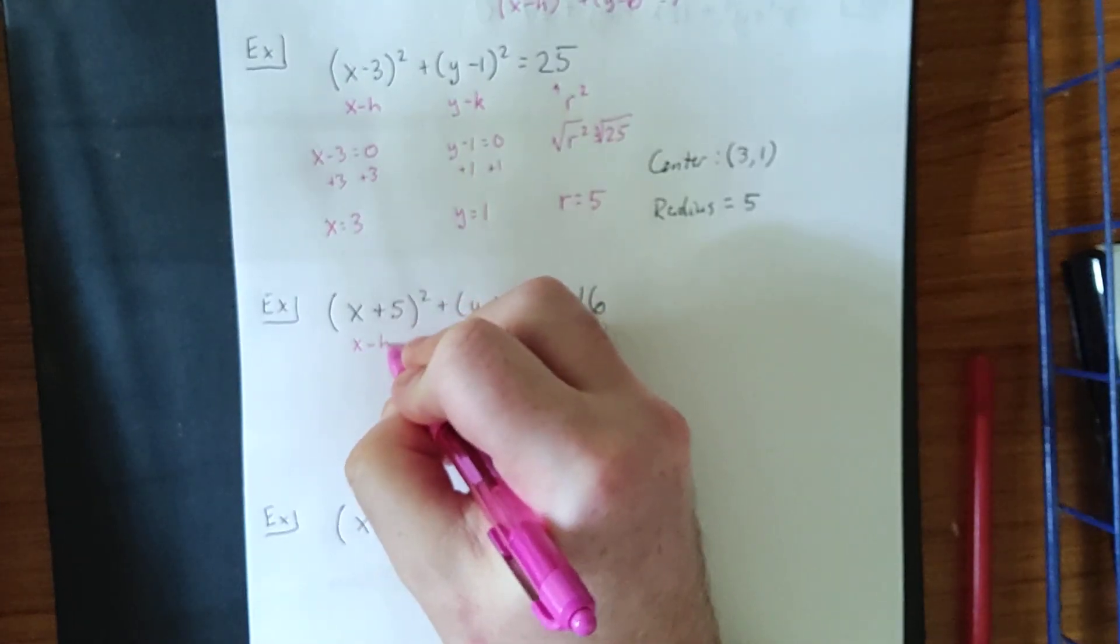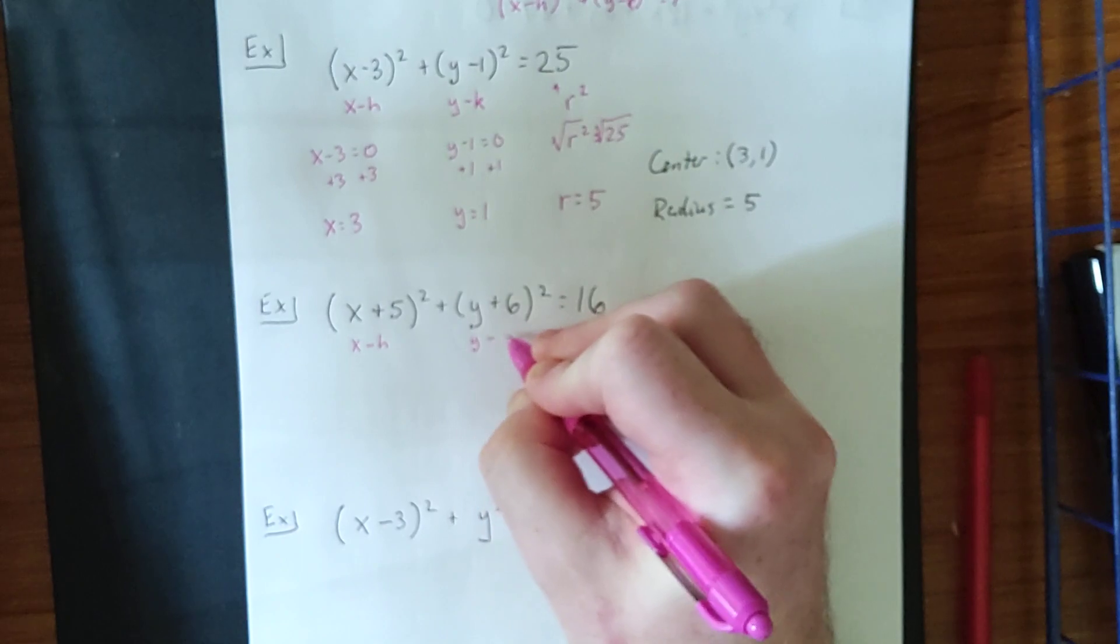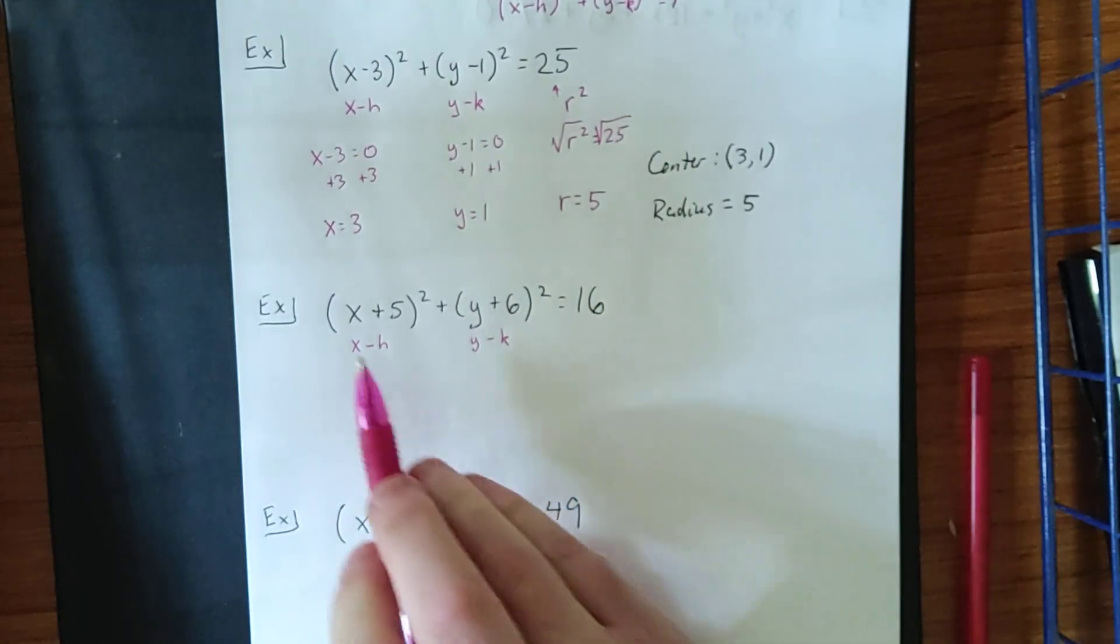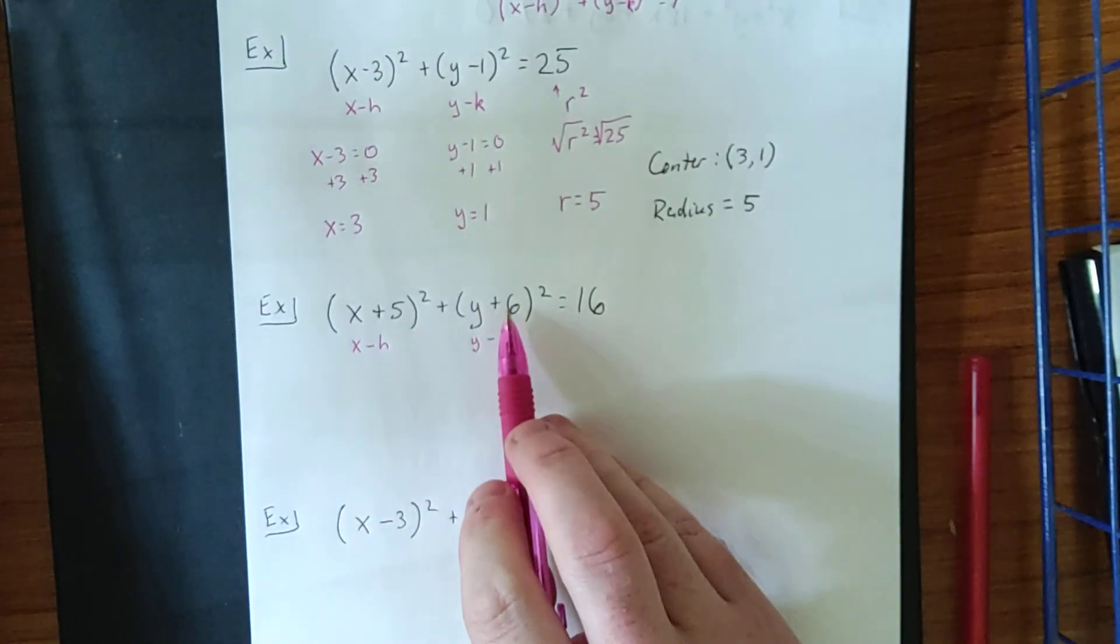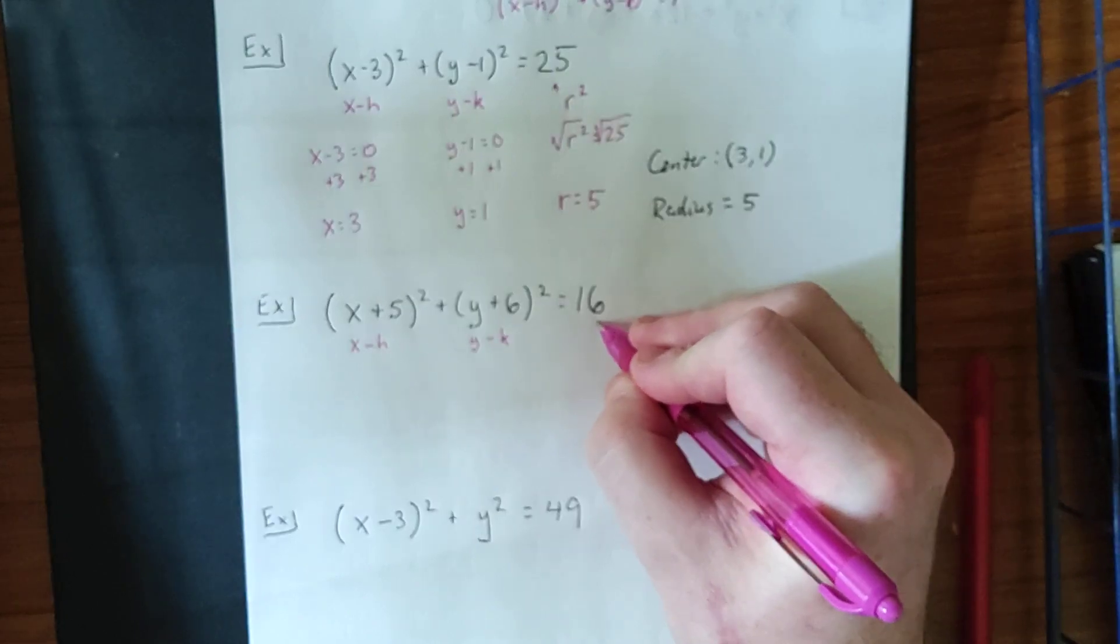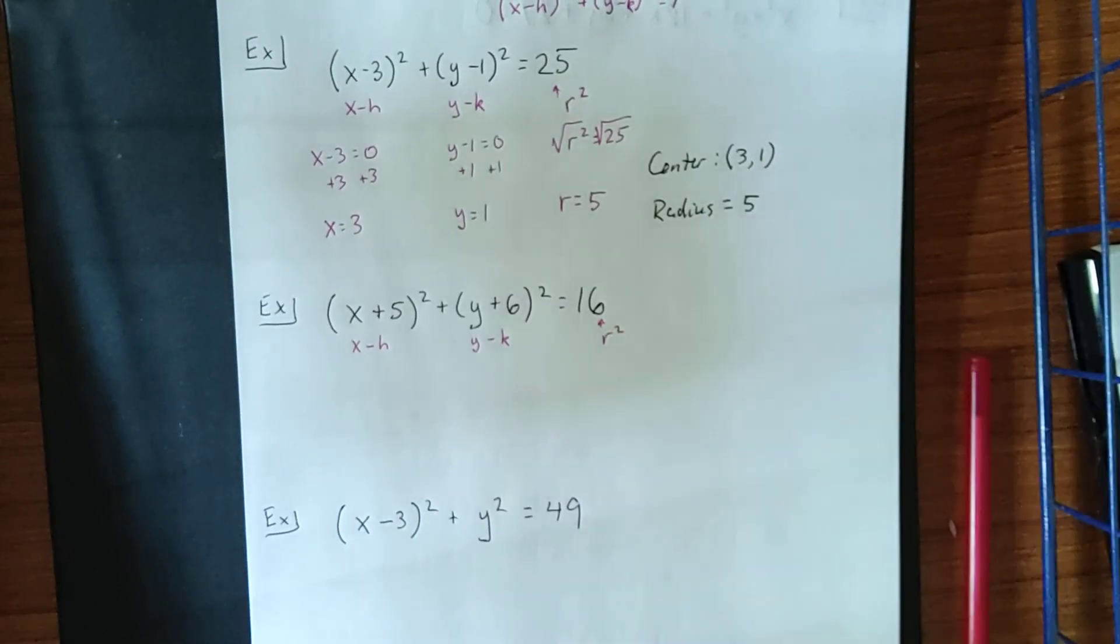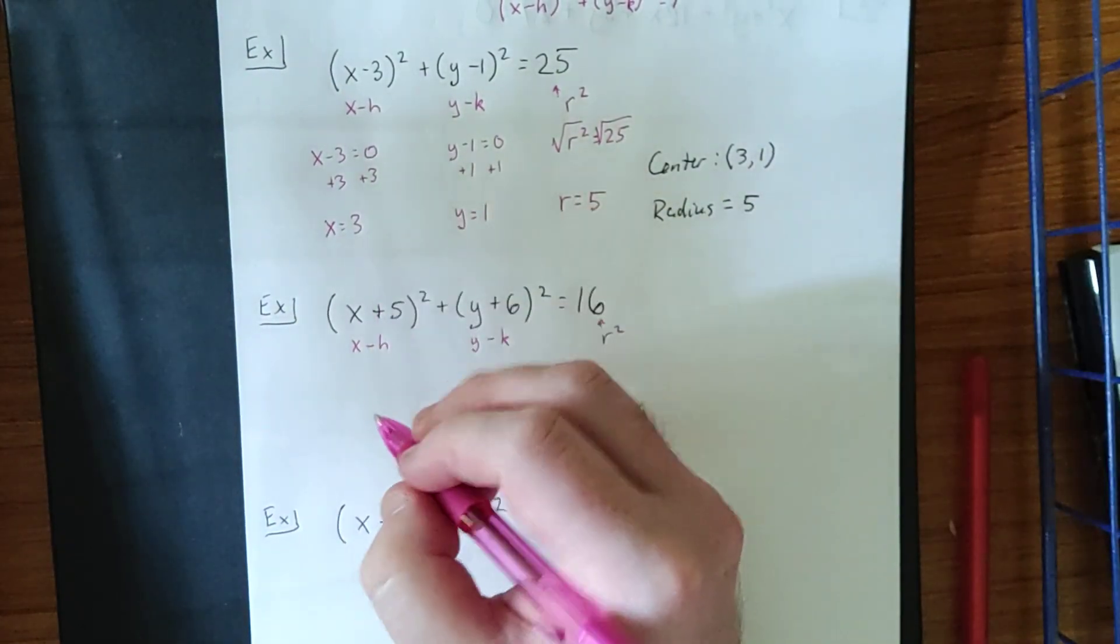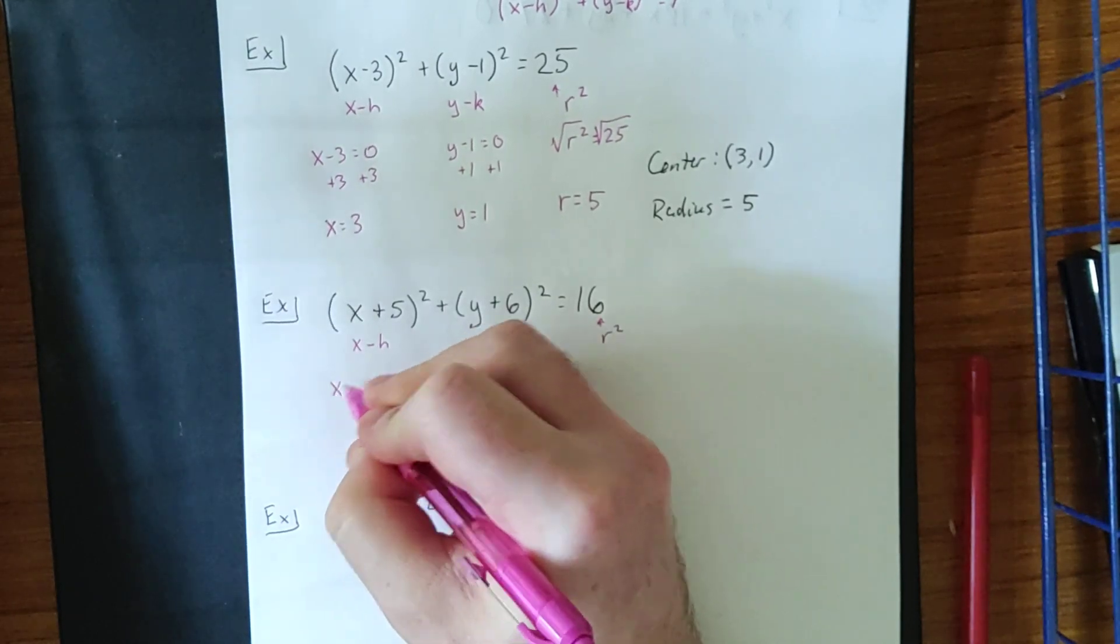This is supposed to be x minus h, this is supposed to be y minus k, but the only way that we can wind up with a plus in here is if you see minus a negative. So, with those things in mind, we could also try the same thing as what we did on the previous problem.